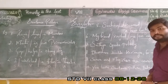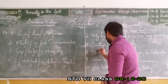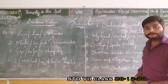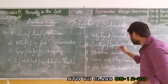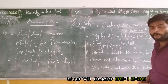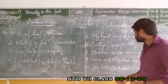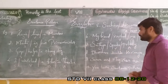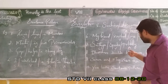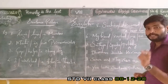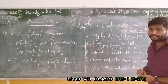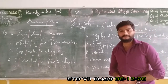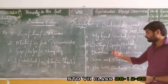Seventh sentence: 'Satya speaks politely.' Satya is subject. Speaks is verb. How does she speak? Politely — the manner in which she speaks. So it is an adjunct. Politely refers to manner. Usually, manner words end with '-ly': politely, harshly, spontaneously, melodiously, likewise. So the pattern here is S, V, A.